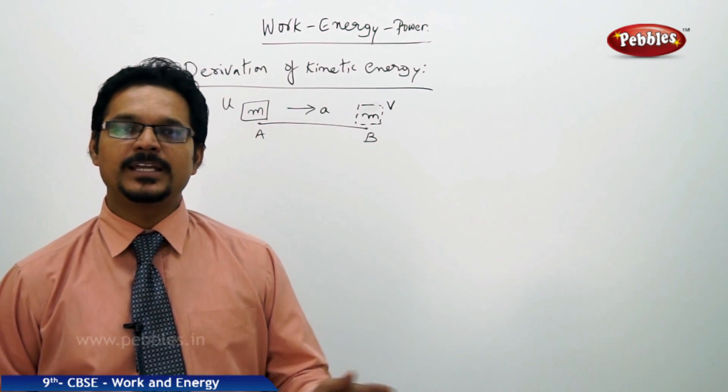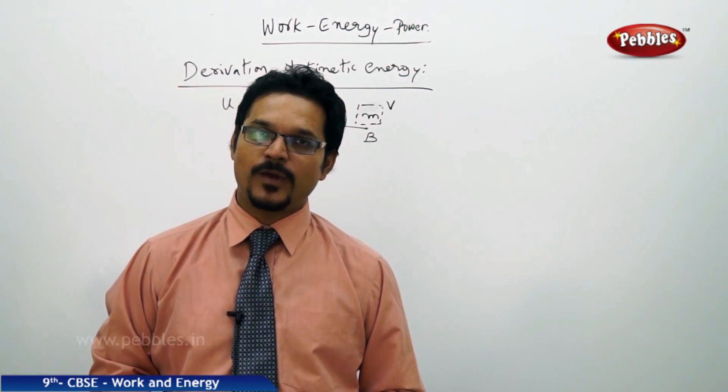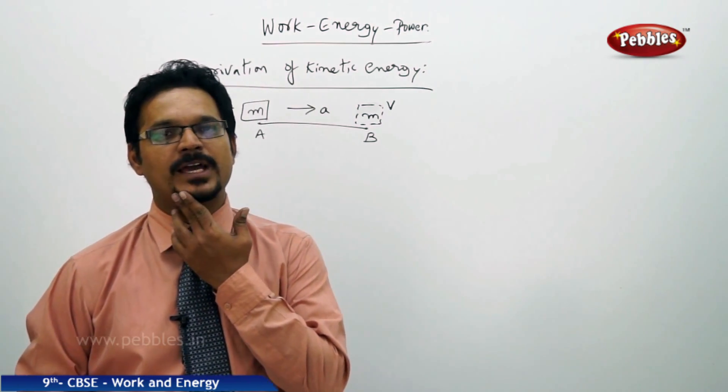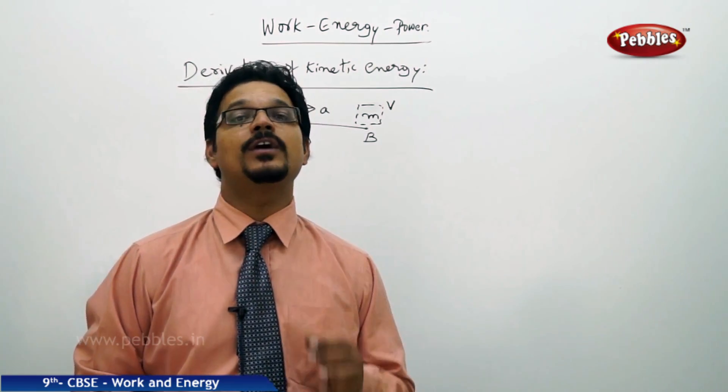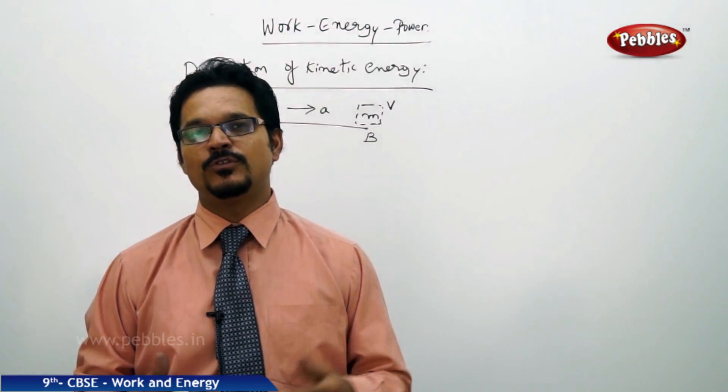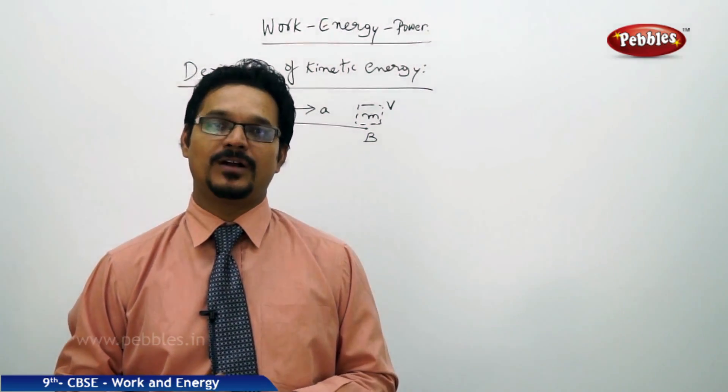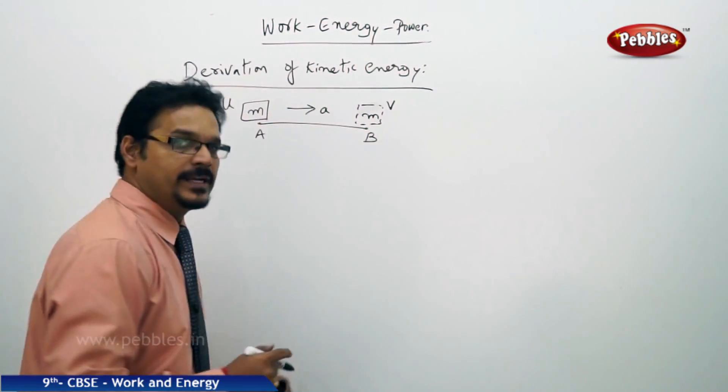We learned about kinetic energy formula which is half mv squared and potential energy formula which is mgh. Now we're going to derive these formulas and let you know how those formulas have come.